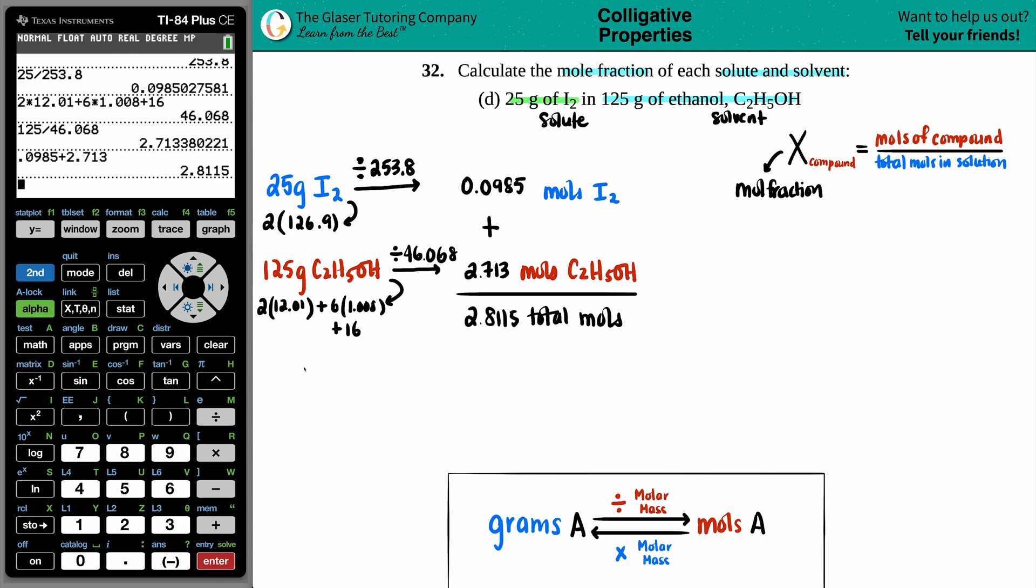So now we're ready to rock and roll. Let's do it over here, X and X. I'm just going to be equal to some type of fraction. And we'll do the I2 on the top and the ethanol on the bottom, C2H5OH.